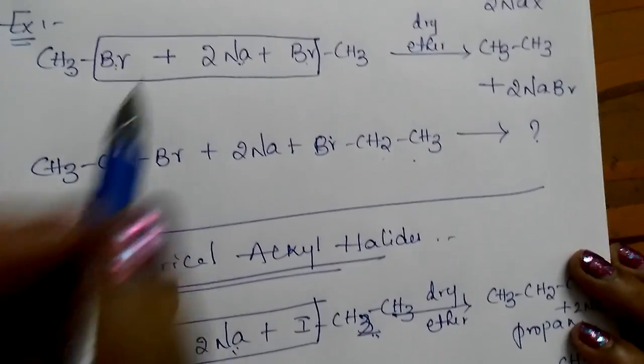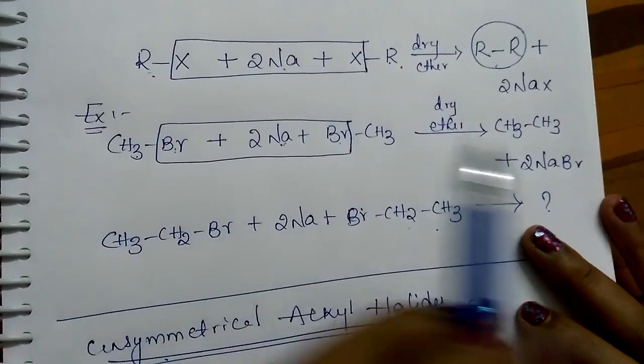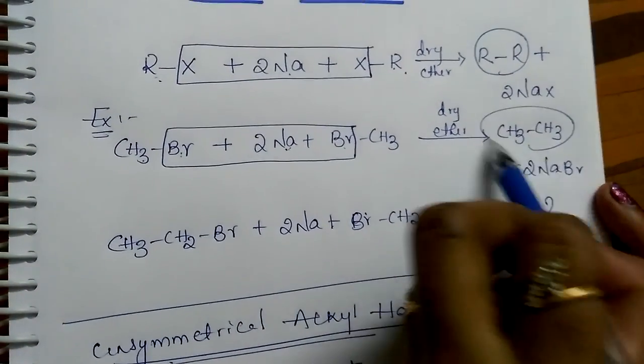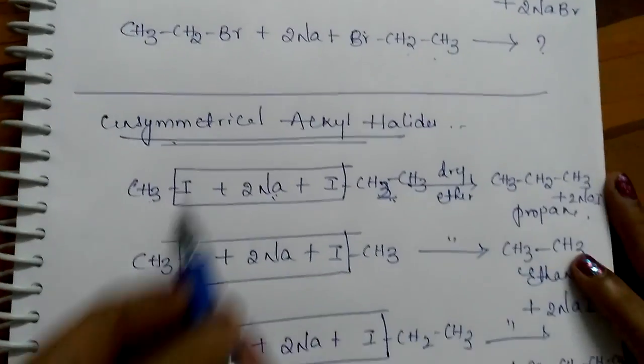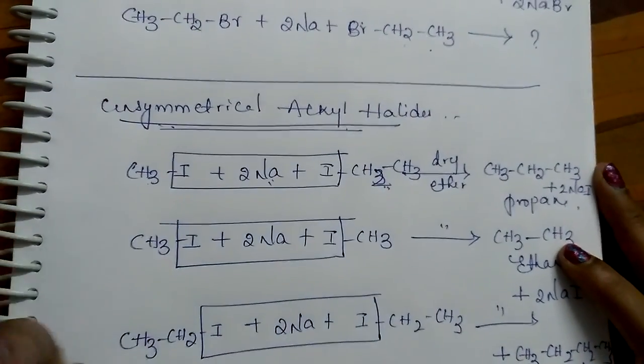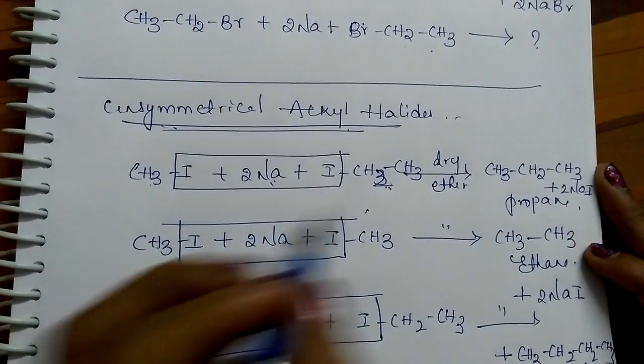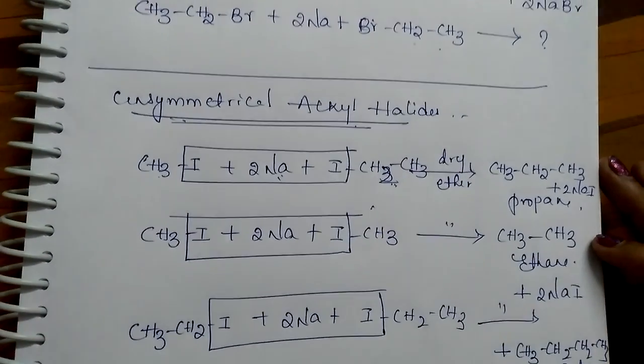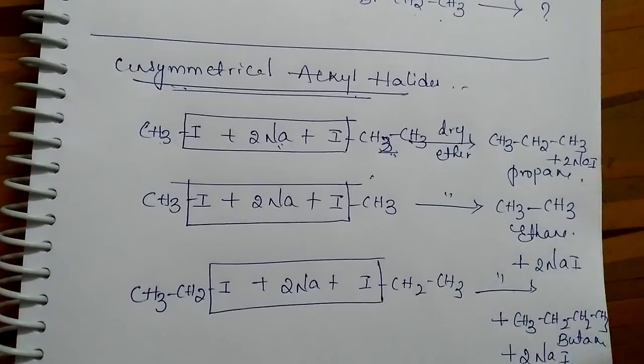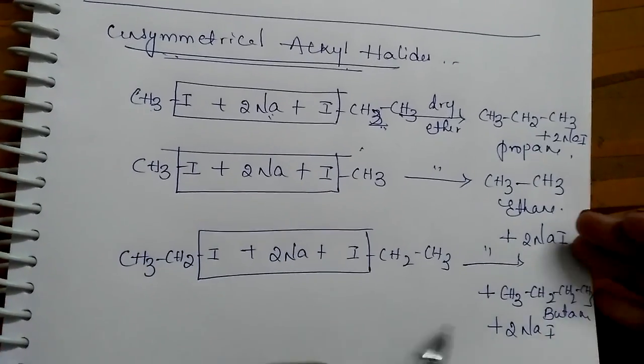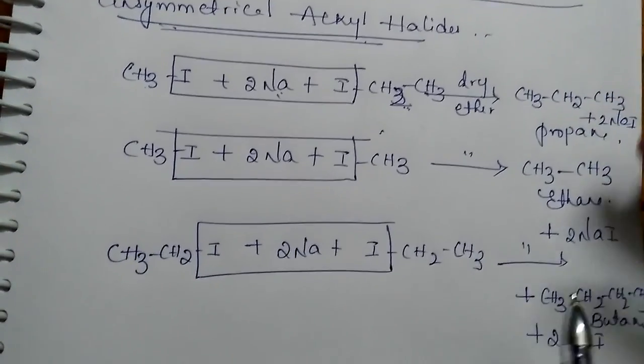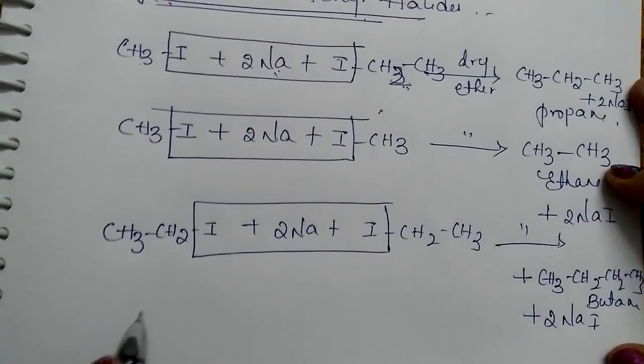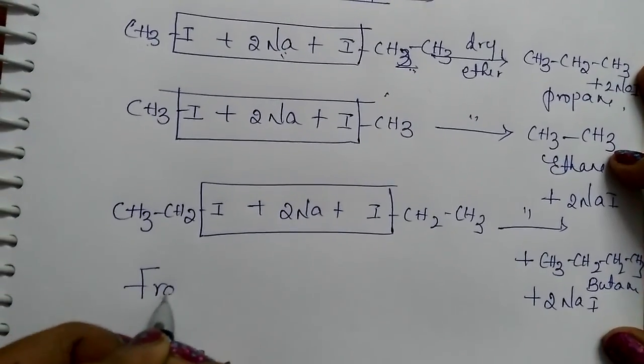In the case of symmetrical alkyl halides, only one product is formed but in case of unsymmetrical alkyl halides, if they react, 3 products are formed. But these 3 alkanes have similar boiling points, very close boiling points. That is why we cannot separate them through fractional distillation.